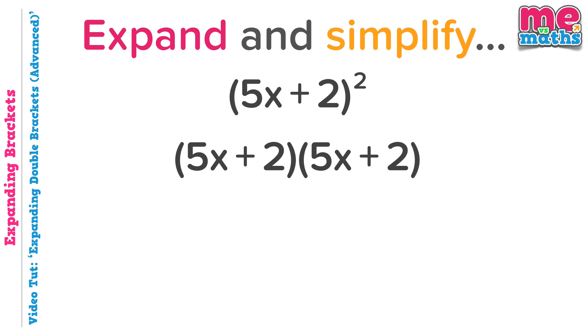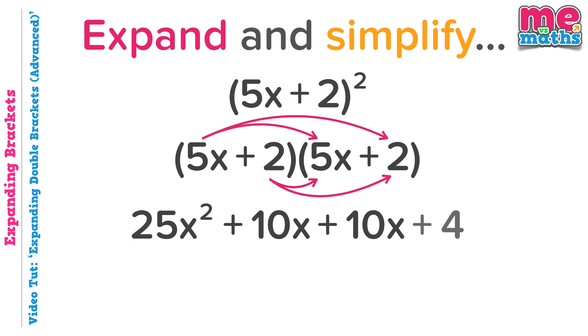Now the expansion part should be okay. 5x times 5x is 25x squared. 5x times 2 is 10x. 2 times 5x, 10x again. And 2 times 2, plus 4.